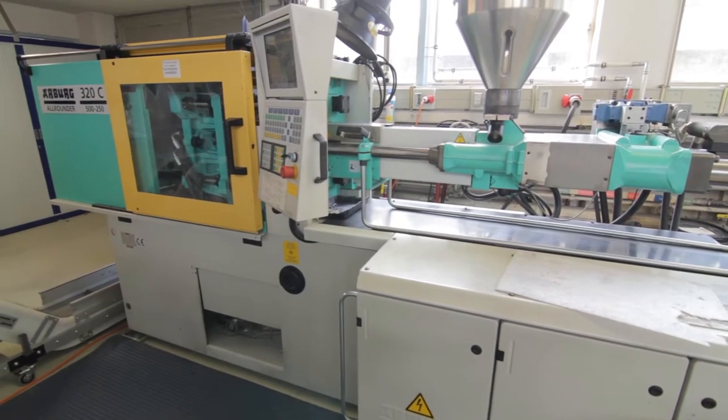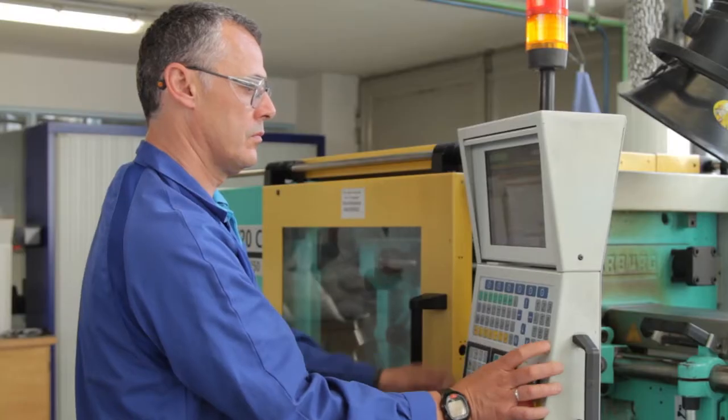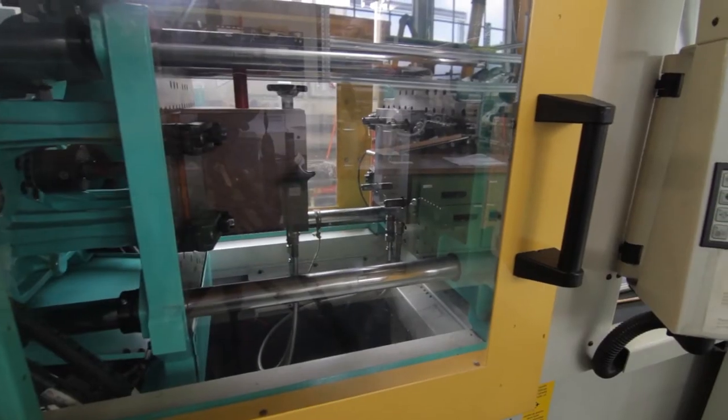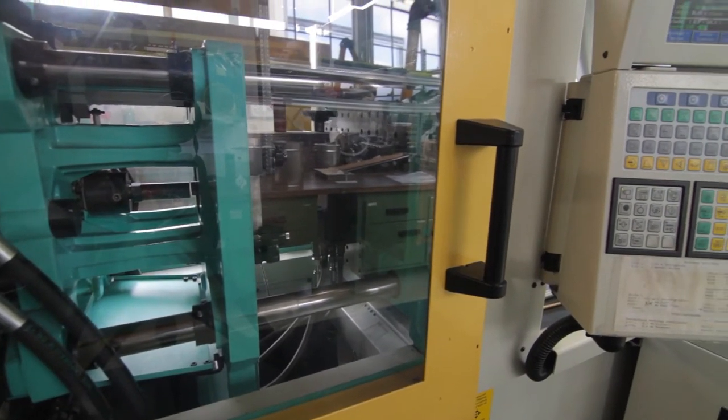Injection molding is a manufacturing process for producing parts by injecting material into a mould. Material for the part is fed into a heated barrel, mixed and forced into a mould cavity where it cools and hardens to the configuration of the cavity.